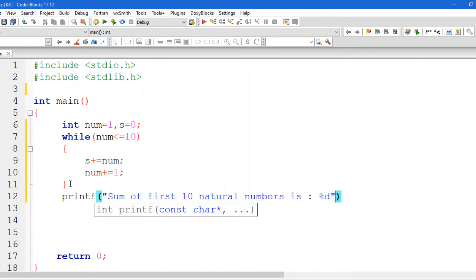Sum of natural numbers is colon, then percent d for sum. And we will run, build and run this program. Will take a little time to begin.